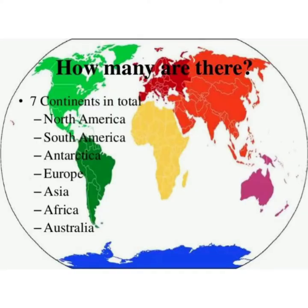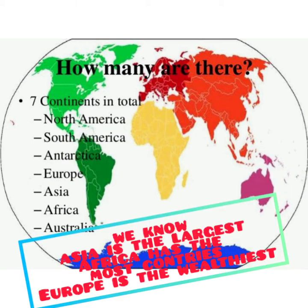Before we move forward, I would like to explain you about the seven continents. We know that there are seven continents in the world. Asia is one of the largest continents in terms of population and land area. Africa is the largest continent in terms of number of countries — it has around 58 countries. Europe is known as the wealthiest continent in the world.